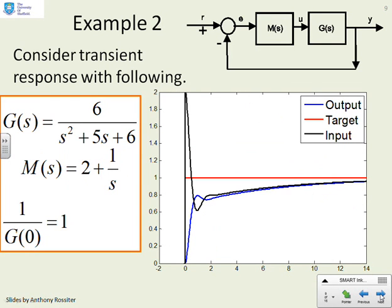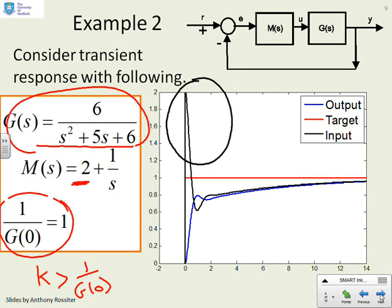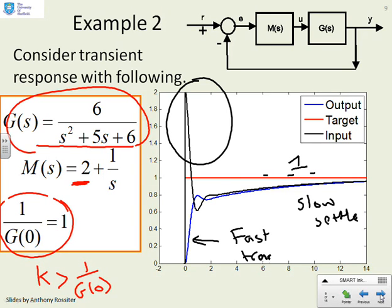Here's a second example. We've got g(s) = 6/(s² + 5s + 6). Here g(0) = 1, so 1/g(0) = 1. Starting with k = 2, we've got k greater than 1/g(0), so we're expecting a fast transient. Looking at the input signal: the initial input is very aggressive, shoots up to 2, even though the steady state is only going to be 1. Then u dips down and is very slow to settle — slow settling time. But we've got a fast transient. Putting k large gives a fast transient, but doesn't necessarily help the system get to steady state any quicker.